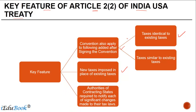The authorities of contracting states, namely India and US, are required to notify each other of any significant changes which are made to their tax laws. These are some of the distinguished features which were there in Article 2 of the India-USA Treaty.